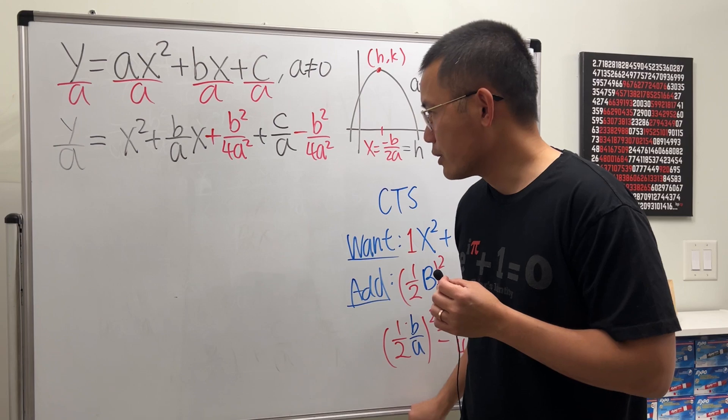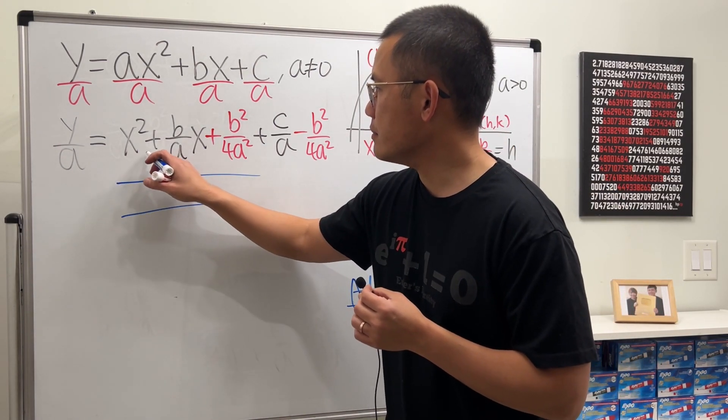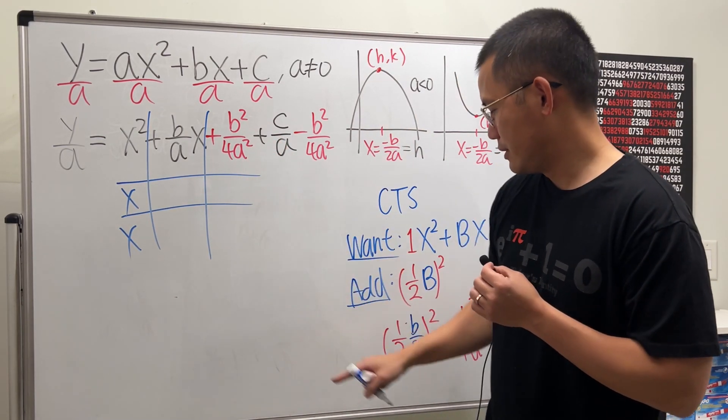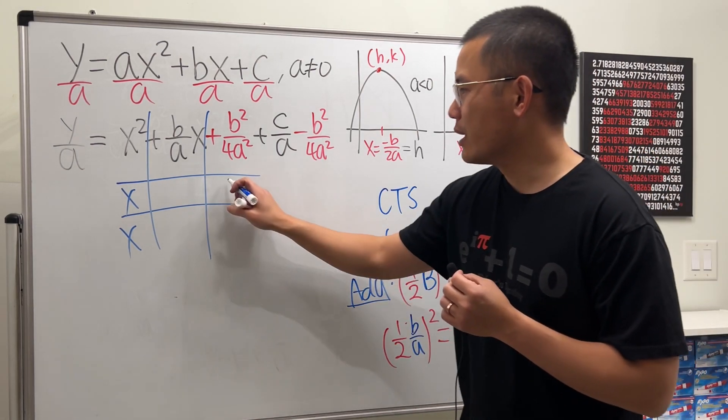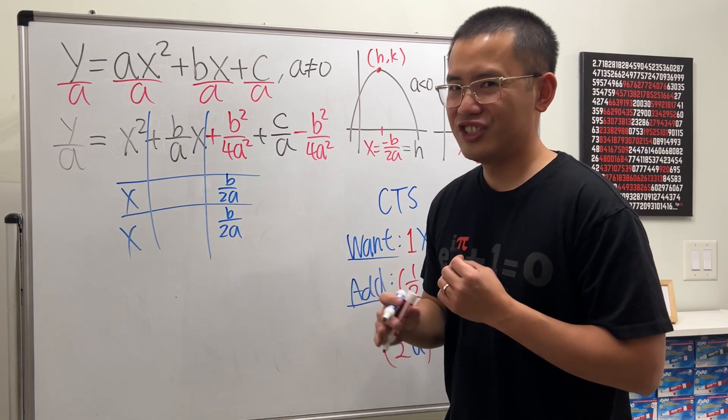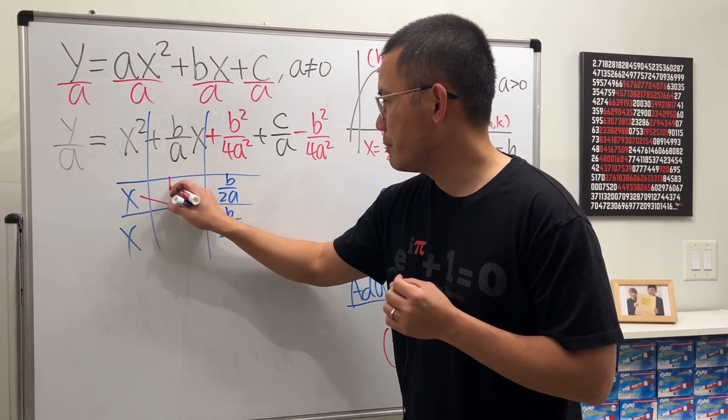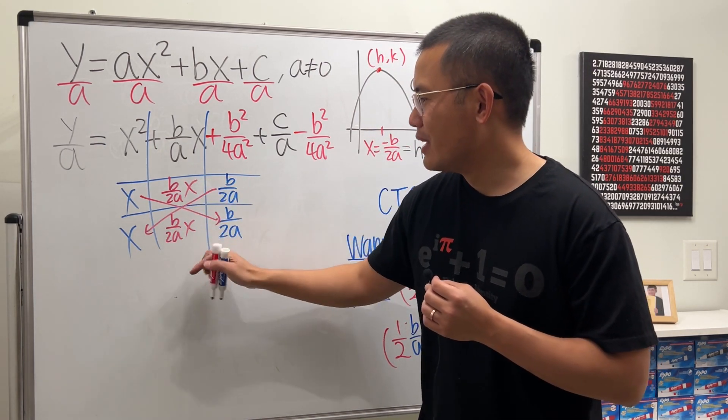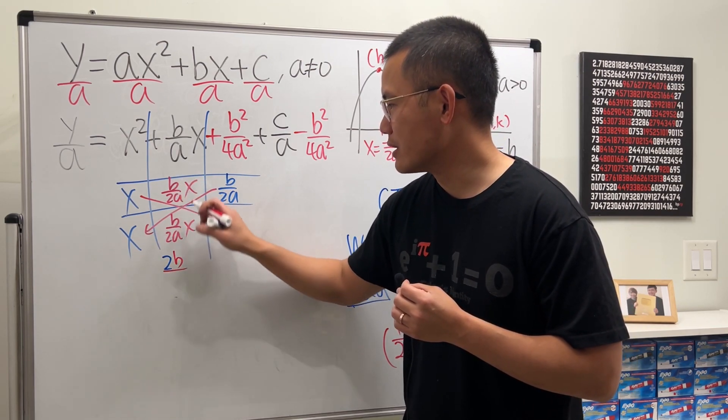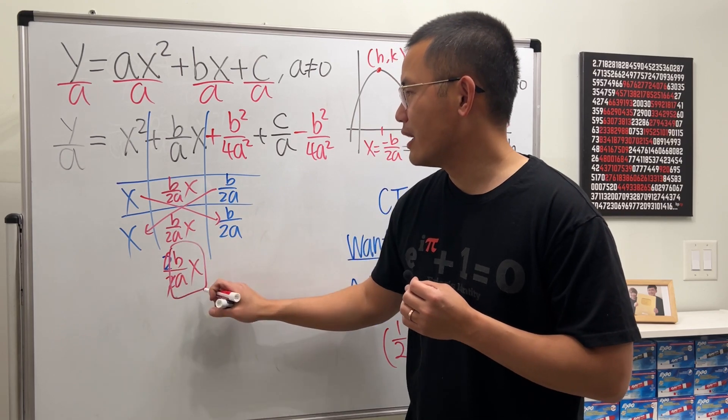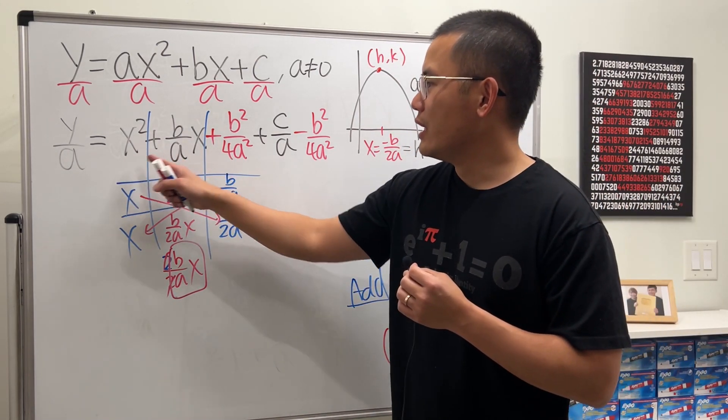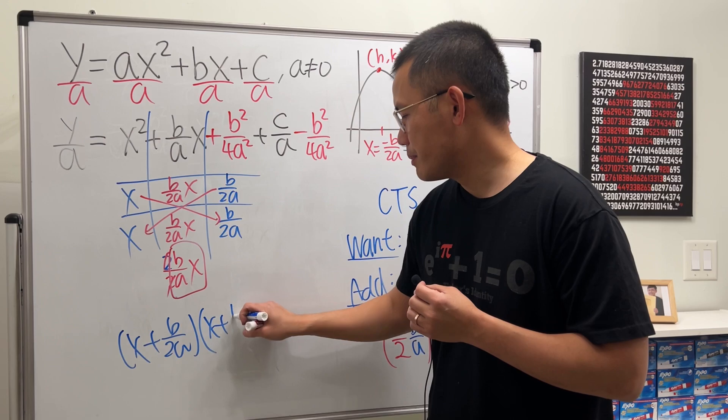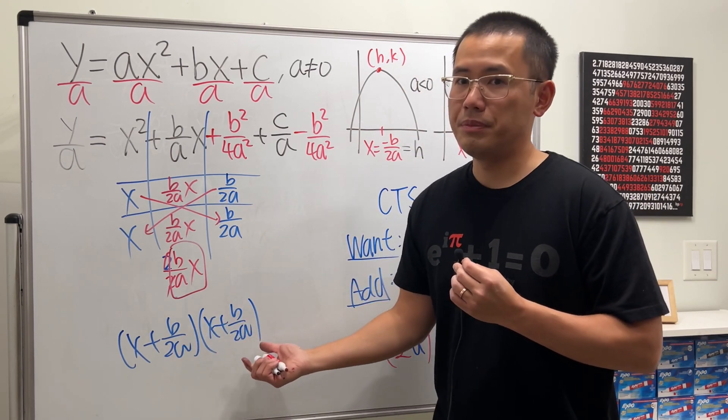It will make this factorable, and both factors will be equal. So we get perfect square. If you do the tic-tac-toe method, x times x gives us x squared. And then what times what gives us this? The answer is b over 2a times b over 2a. x times this is b over 2a x. And then do another one. Add them up. We have two of them to be over the same denominator. Don't we just get this back? So, if we factor this, we just get x plus b over 2a times another one, which is just x plus b over 2a squared.